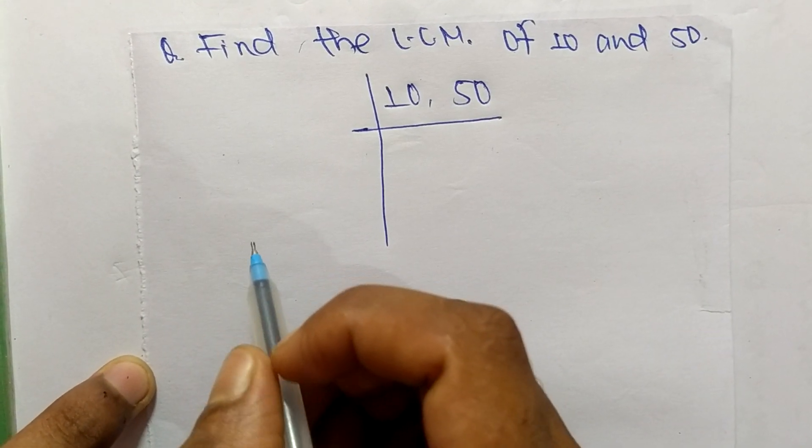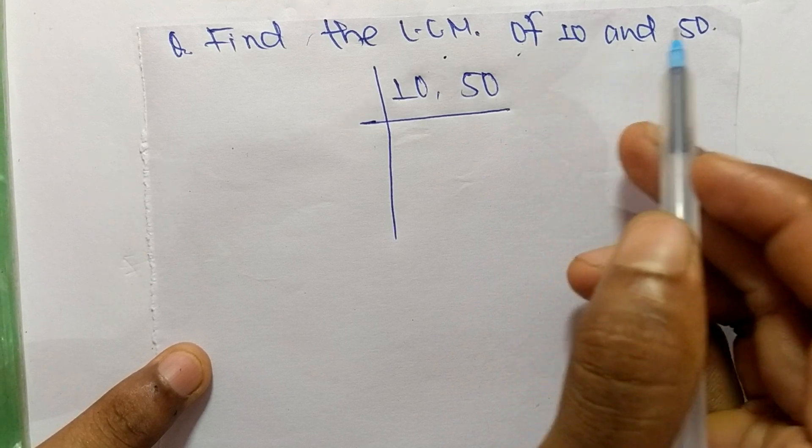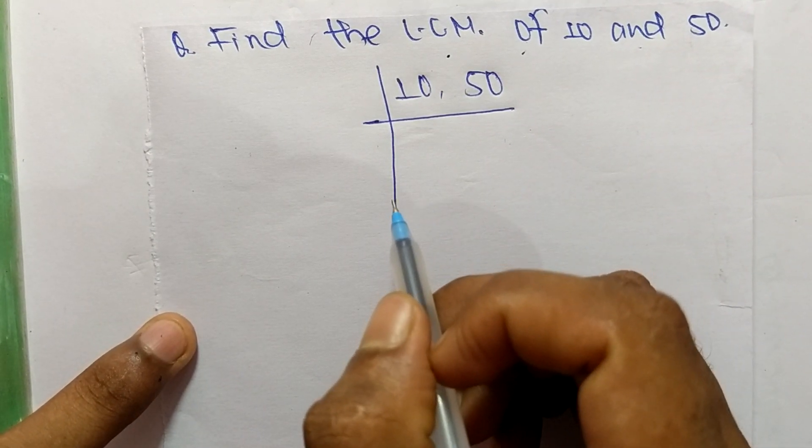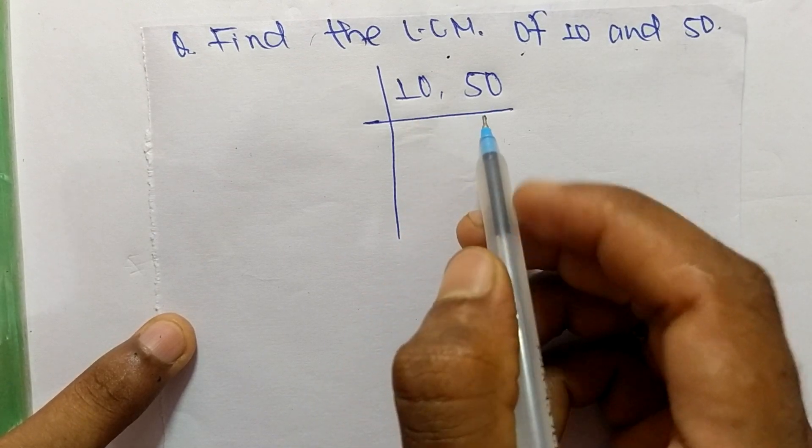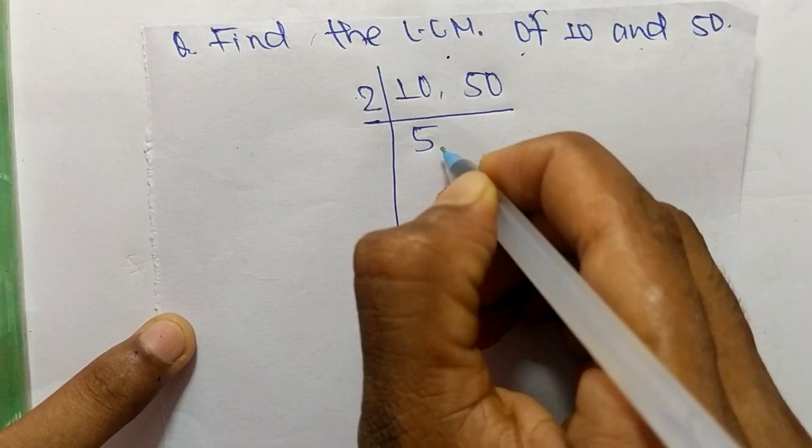Today in this video we shall learn to find the LCM of 10 and 50. First, we choose the lowest number which can exactly divide 10 and 50, so the number is 2. 2 times 5 means 10 and 2 times 25 means 50.